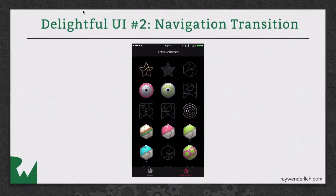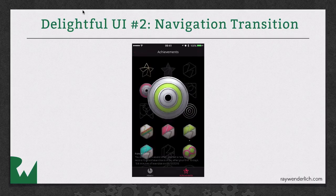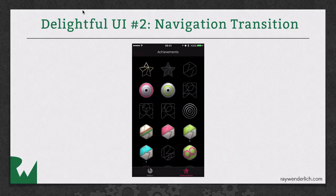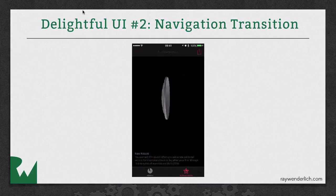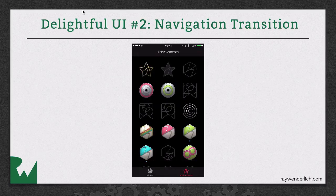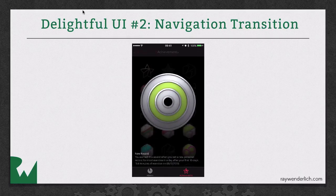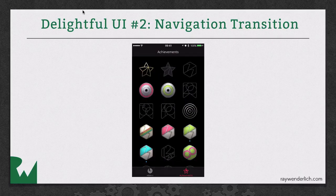Another good example is in the Activity app. If you manage to make any of the achievements in the Activity app, when you select one, you can see it spins out towards the screen. That's actually a navigation transition, but it doesn't look anything like the standard navigation transition. In the second demo, you're going to learn how to make a custom navigation transition.